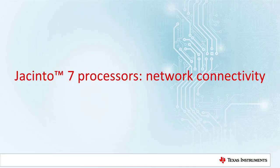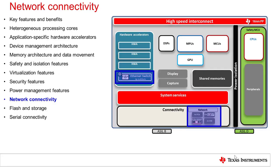The Jacinto 7 processors implement a rich set of networking subsystems and peripherals, which are valuable for automotive gateway systems and for high-performance chip-to-chip data and message sharing. These subsystems include Ethernet switches, PCIe controllers, CAN-FD controllers, USB and MediaLB controllers. In this section, I will give an overview of the various networking subsystems and peripherals available on the SoC.